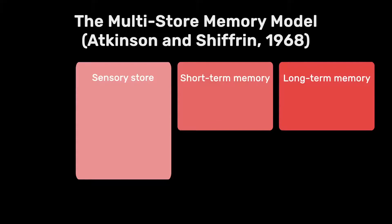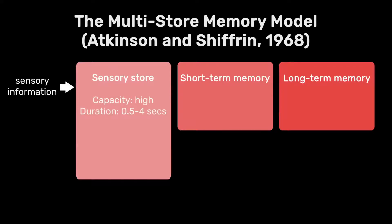The sensory stores are the most basic. They keep the sensory information for a very, very brief period of time. By sensory information, I primarily refer to auditory information, which is stored in the echoic store, and visual information that is stored in the iconic store.